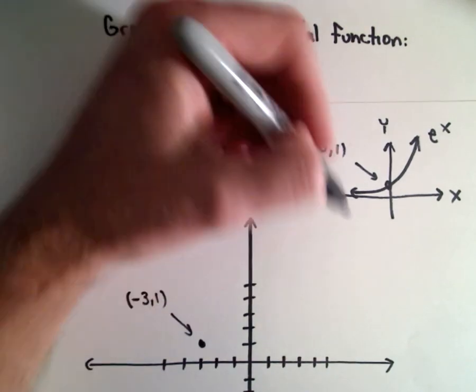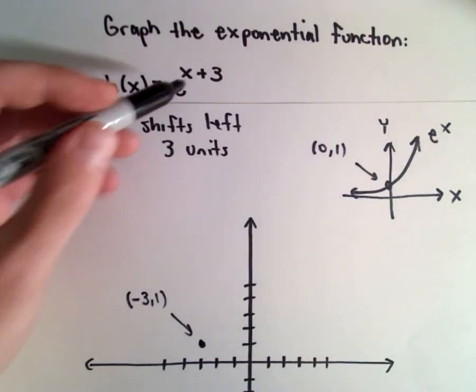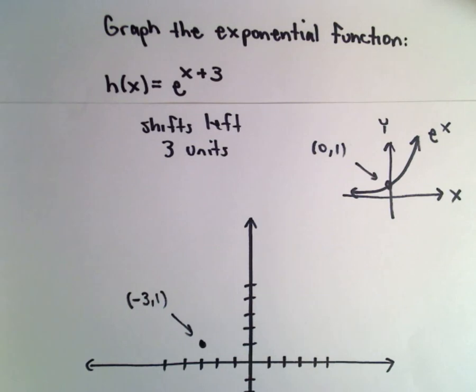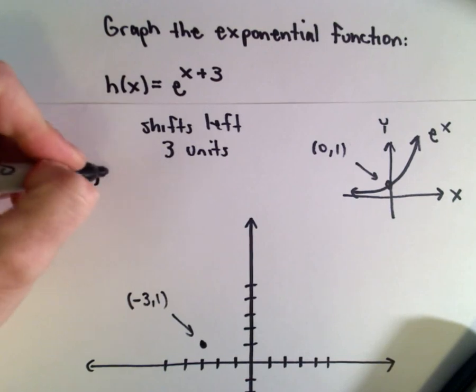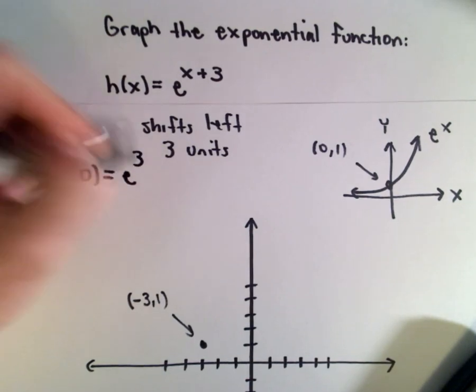And now, our graph is just going to keep getting larger and larger. You know, we could even figure out the y-intercept. The y-intercept would be when x equals 0. That would leave us with e to the third power.